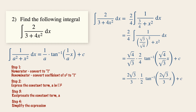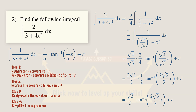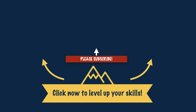Simplifying further, we get square root of 3 over 3, times tangent inverse of 2 square root of 3 over 3 times x, plus c. I hope you have learned something from this video. If you have any questions or comments, do leave them in the comments box below, and thank you so much for watching.